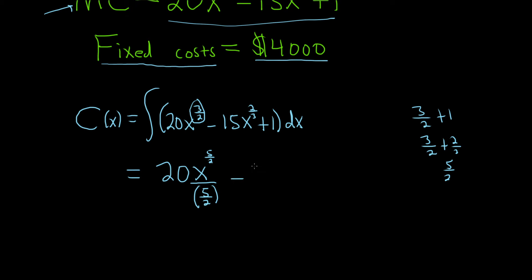Same thing here, minus 15x. And then we take this number and we add 1. So it'll be 2 thirds plus 1. So 2 thirds plus 3 thirds. So that'll be 5 thirds. So you put a 5 thirds here, and then you divide by 5 thirds. So dividing by 5 thirds.